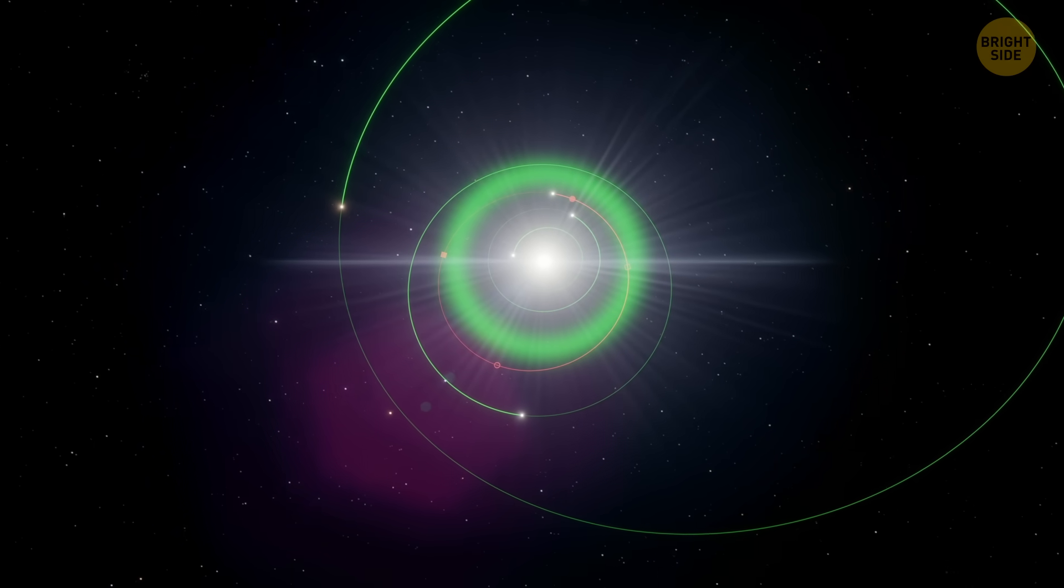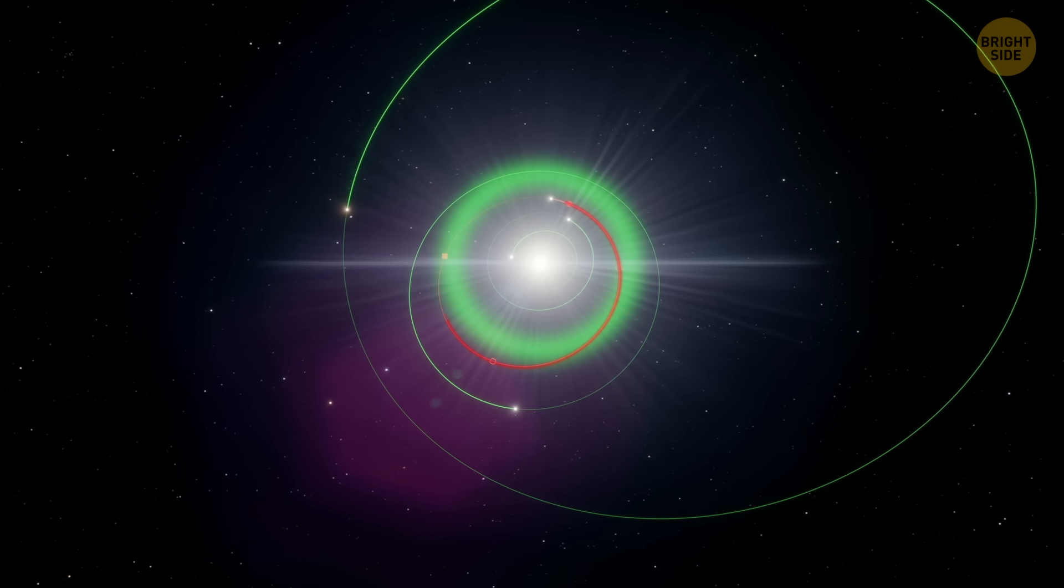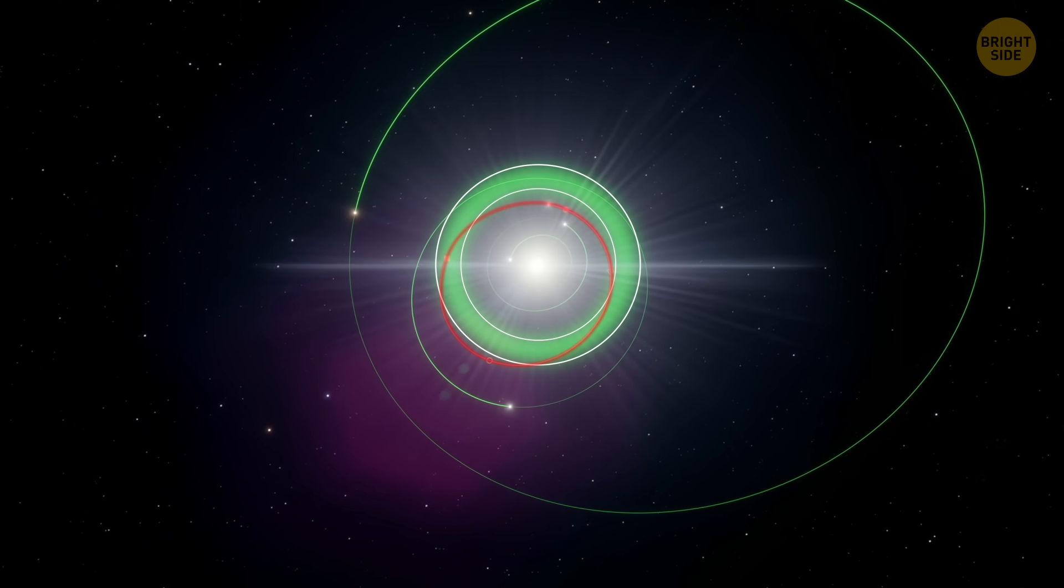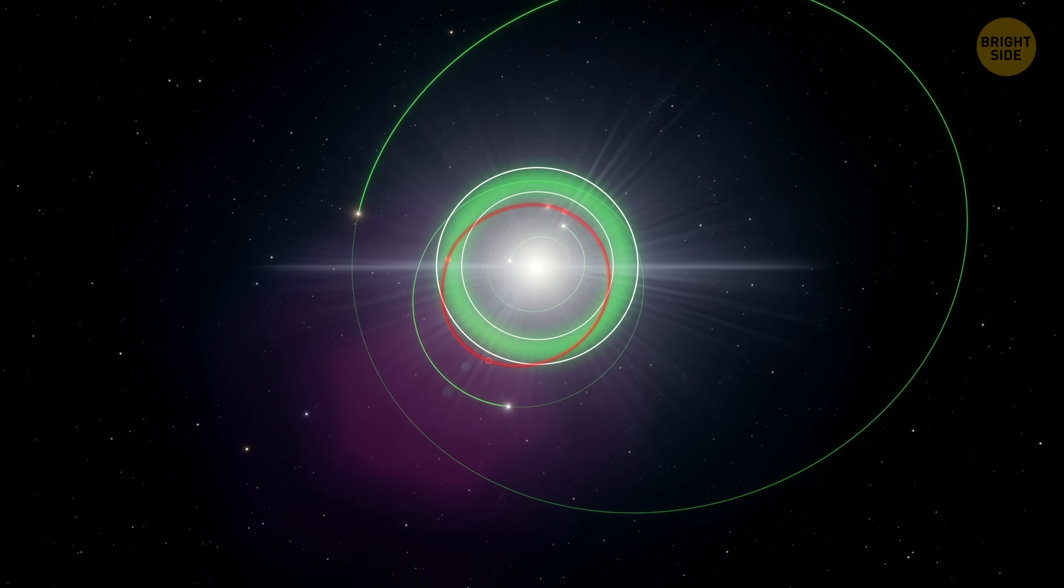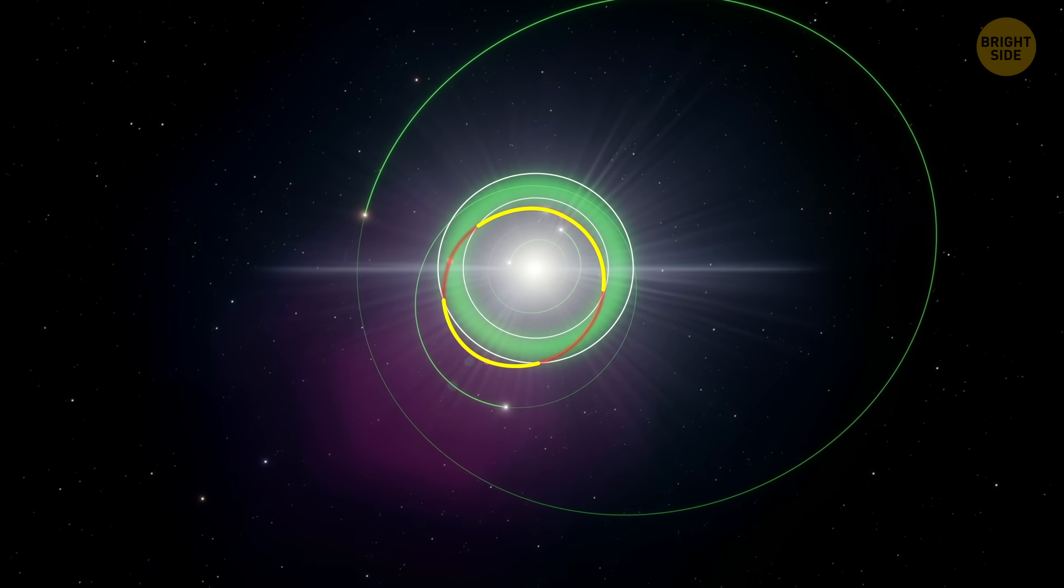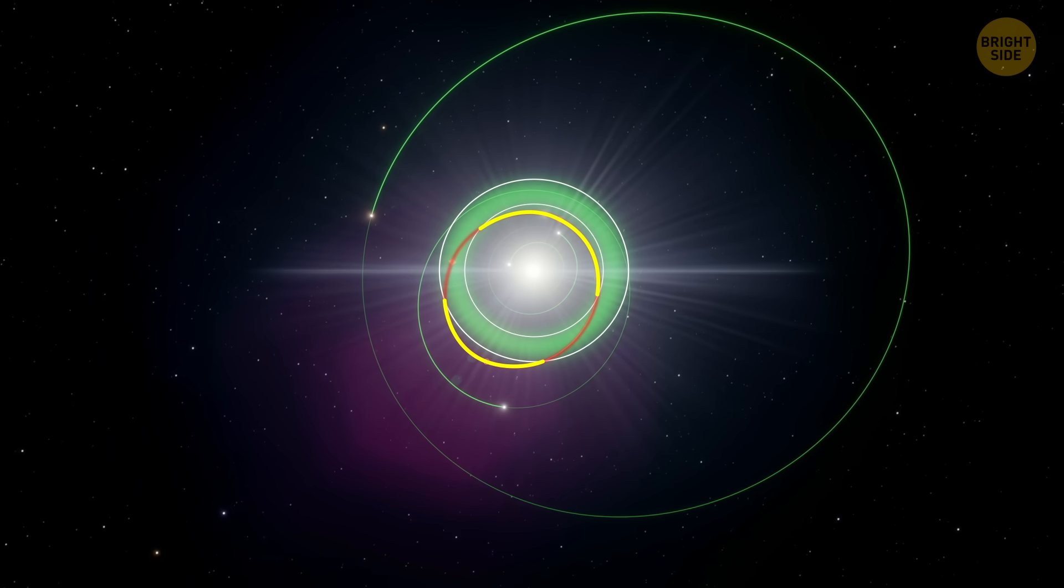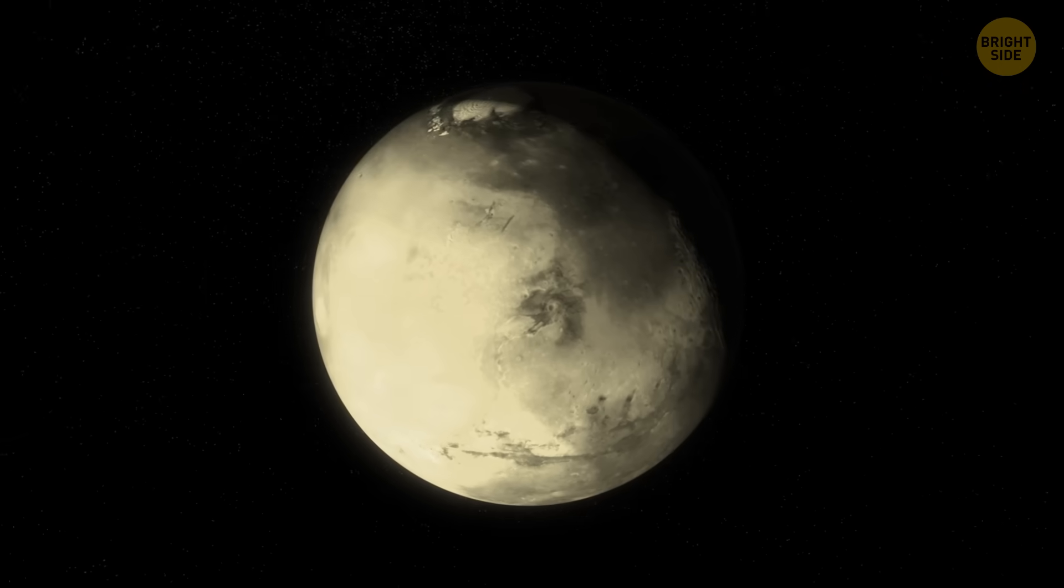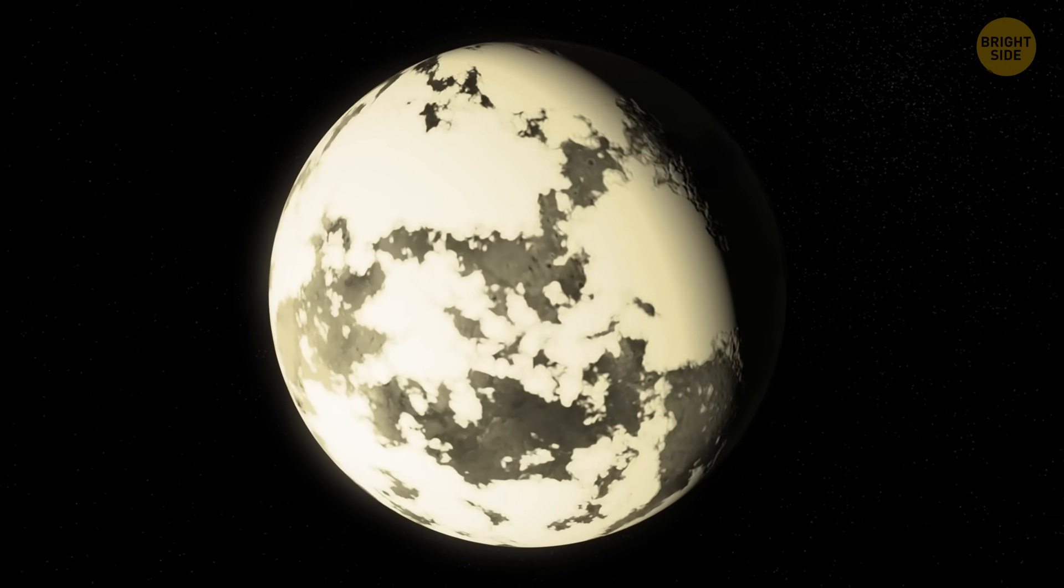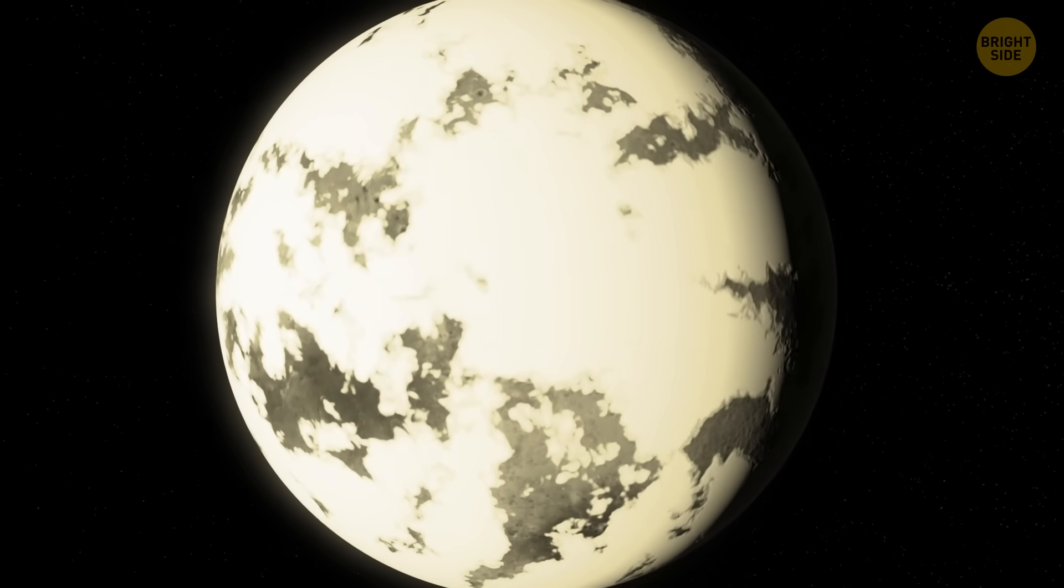But this exoplanet doesn't just cruise around its star in a neat little circle like Earth does. Its orbit is eccentric, which basically means it swings closer and farther from its star as it loops around. That's a big deal, because it actually drifts in and out of the habitable zone, the Goldilocks zone where liquid water could exist. At some points, any water there might freeze solid, and at other times, it could melt into oceans, depending on where the planet is in its journey.